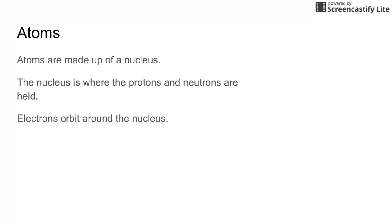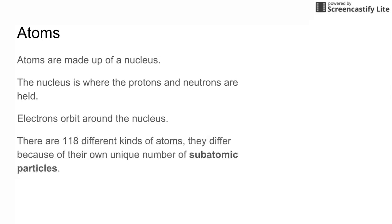The electrons orbit around the nucleus and we call this area the electron cloud. There's 118 different kinds of atoms and they all differ because of their own unique number of subatomic particles. When we talk about subatomic particles, we're talking about the protons and neutrons and the electrons, these small particles that make up the atom.